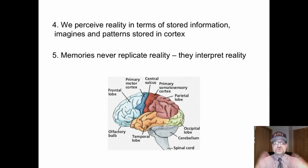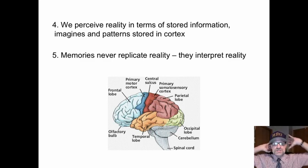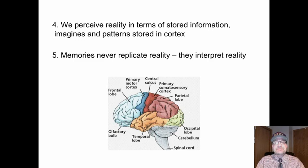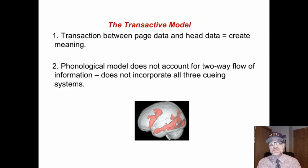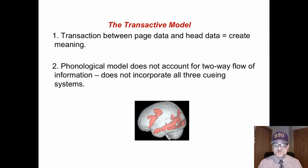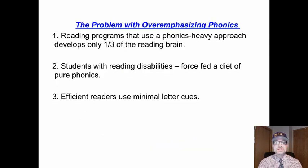We perceive reality in terms of stored information and images in the cortex — the cortex is essentially a memory machine. Scientists have found that memory never replicates reality; our memories reinterpret reality. You can never remember something totally objectively — we are always using the information in our head to reconstruct or reinterpret reality. This is the transactive model: a transaction between the data on the page and knowledge in the head to create meaning. The phonological model does not account for this two-way flow of information and does not incorporate all three cueing systems. The transactive model does.